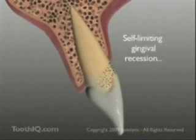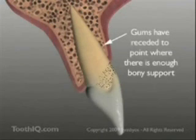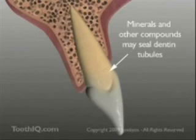Gingival recession that is due solely to the position of the teeth in the dental arches is sometimes self-limiting, with the gums receding only to the point where the underlying bone volume is sufficient to support the gingiva over it. If the level of recession stabilizes, sensitivity may also resolve on its own, as minerals from saliva and toothpaste seal the pores in the exposed root surface.